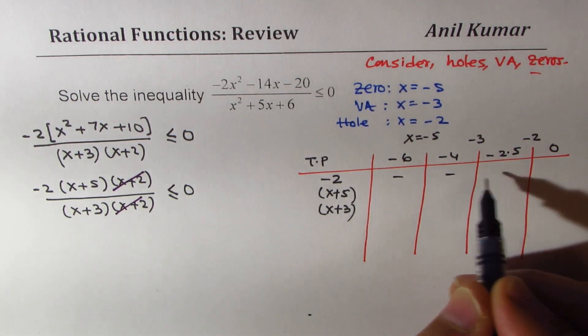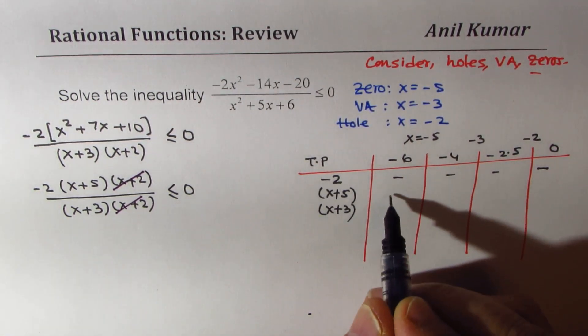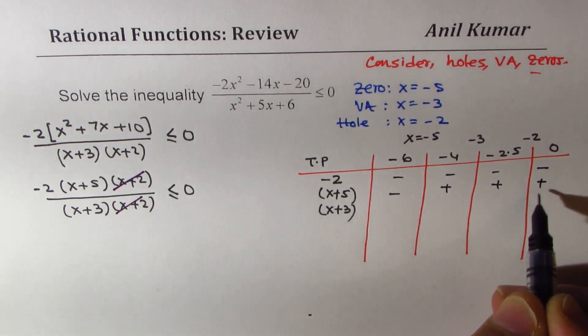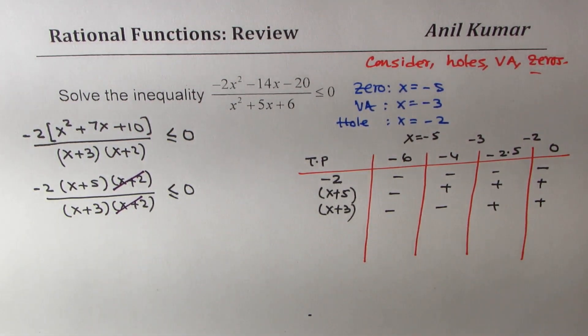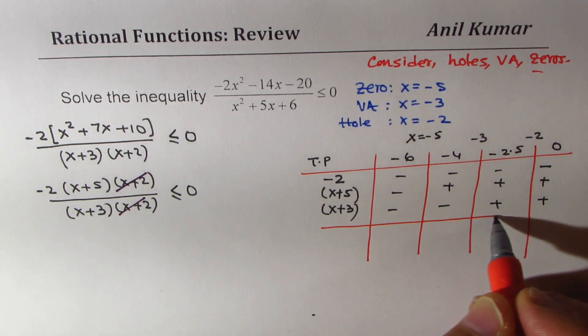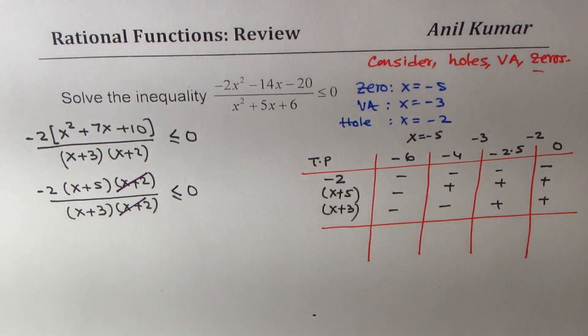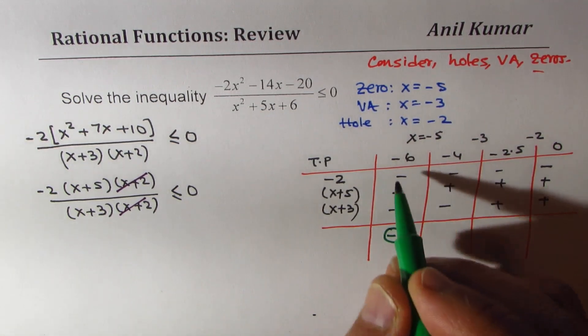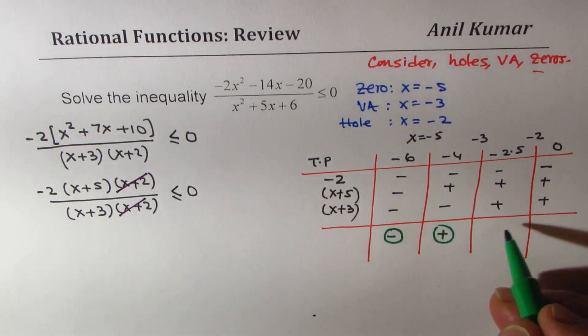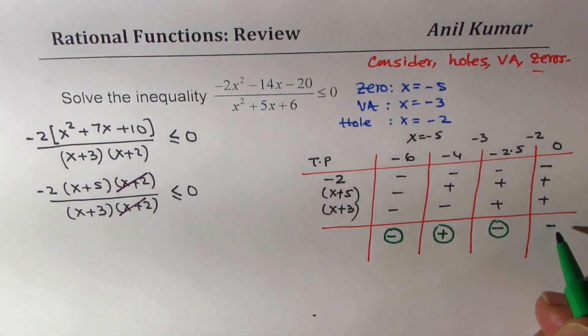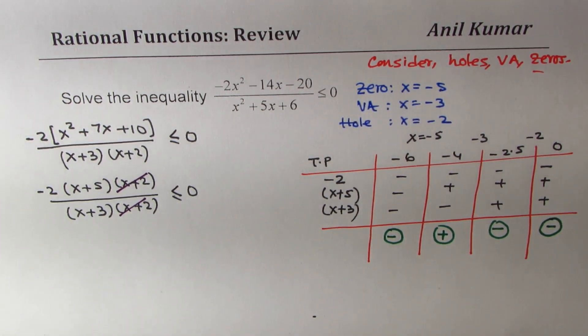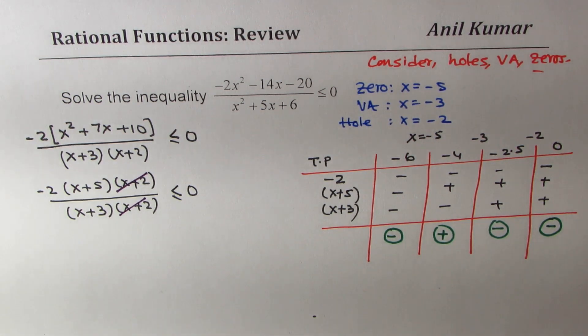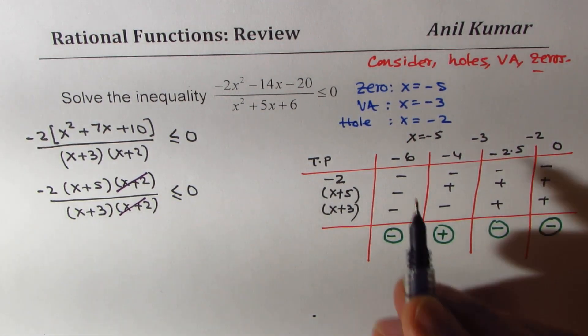Minus 2 is going to be negative for all values. x plus 5 will be negative for minus 6, positive for rest. x plus 3 will be negative for first two values and positive for the rest. So in these intervals, what we get here is positive in the first interval, positive because of two negative signs, and then negative, and thereafter, we do get again negative. So that is how we are going to get the signs for the function in different intervals.